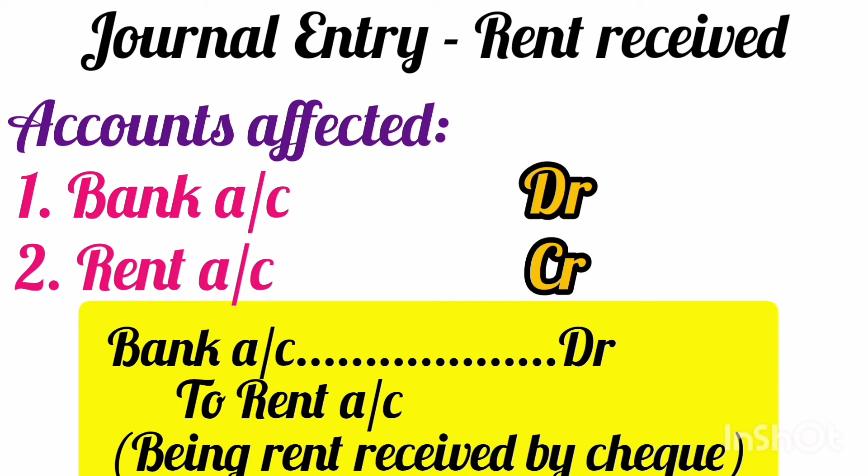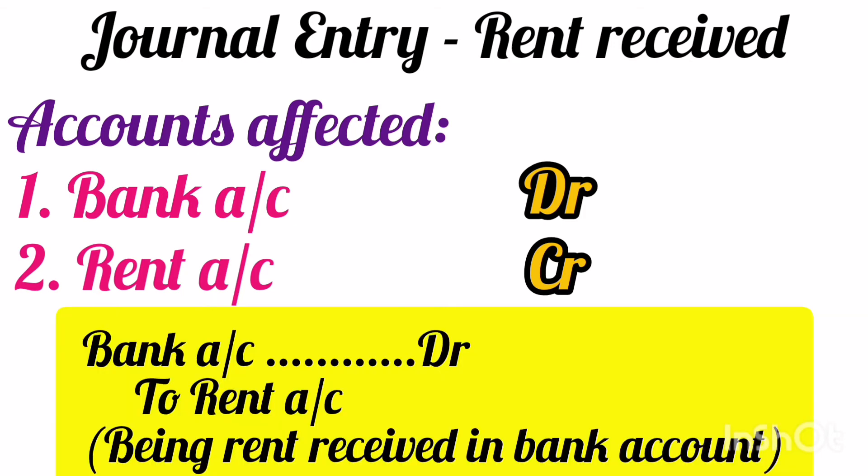Suppose the amount of rent is directly deposited in our bank account. In that case also, since the money is received in bank account, the bank account will be debited. Hence, the journal entry will remain the same: bank account debit to rent account. Narration will be: being rent received in bank account.